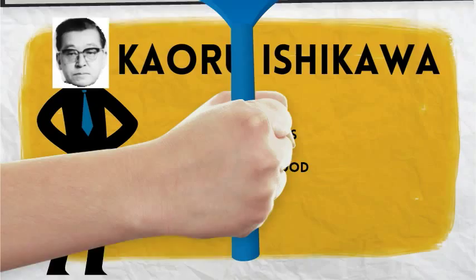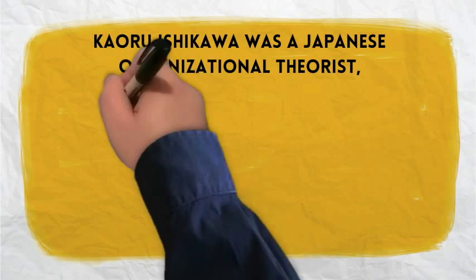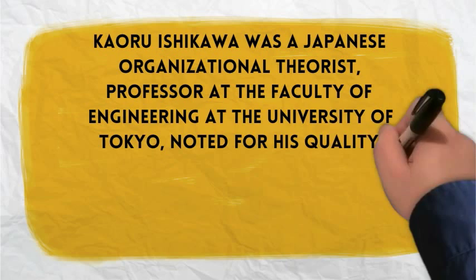Karu Ishikawa by Burke Edwards and Kelly Greenwood. Karu Ishikawa was a Japanese organizational theorist, professor at the Faculty of Engineering at the University of Tokyo, noted for his quality management innovations.